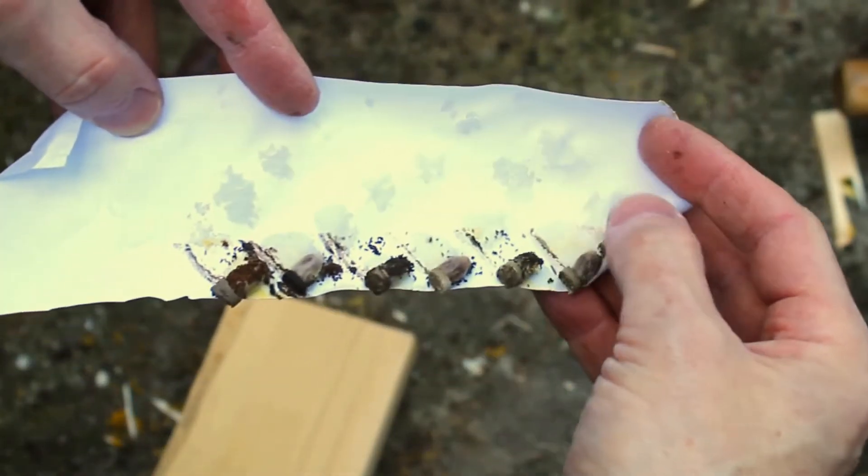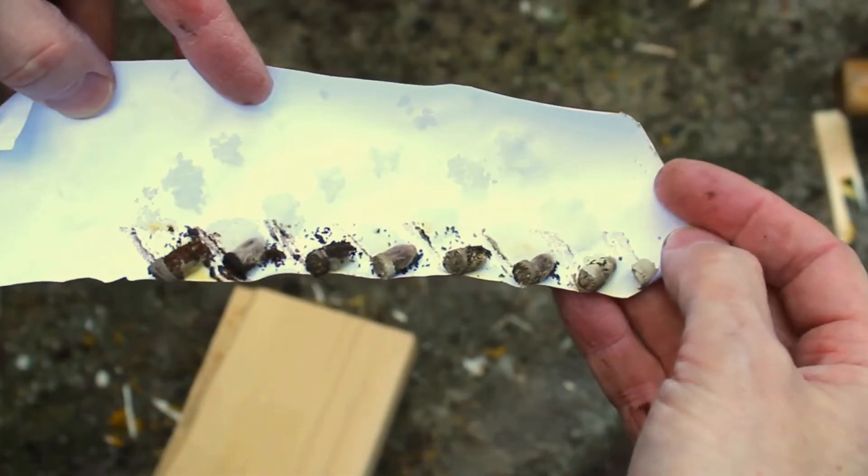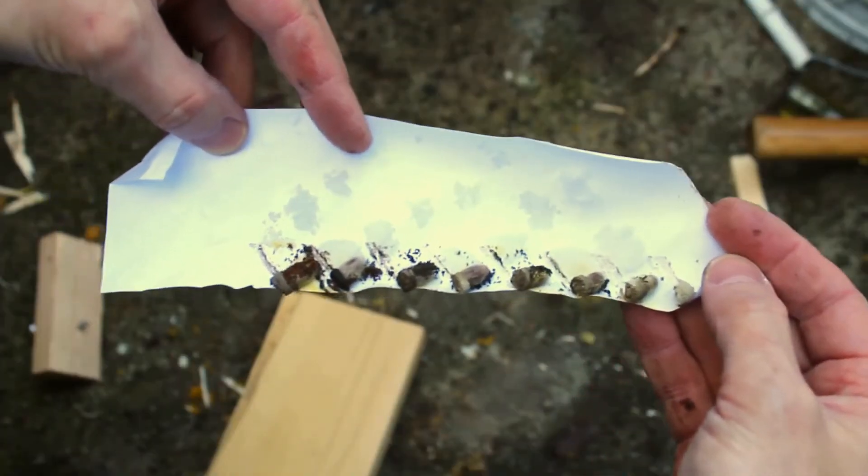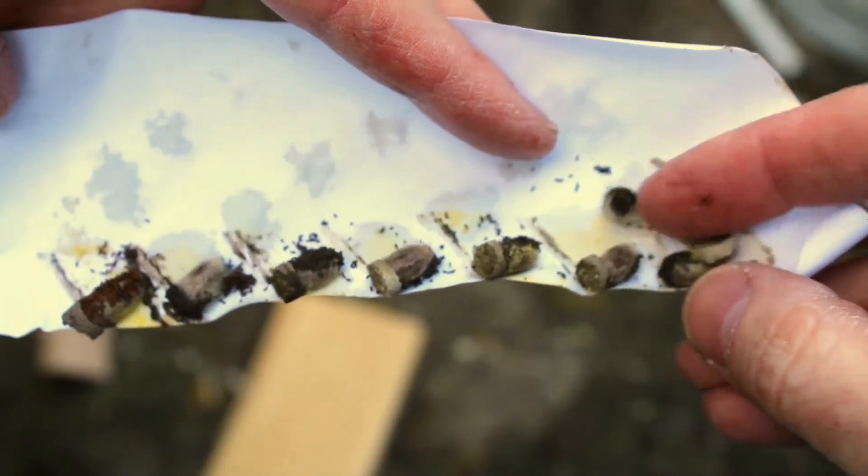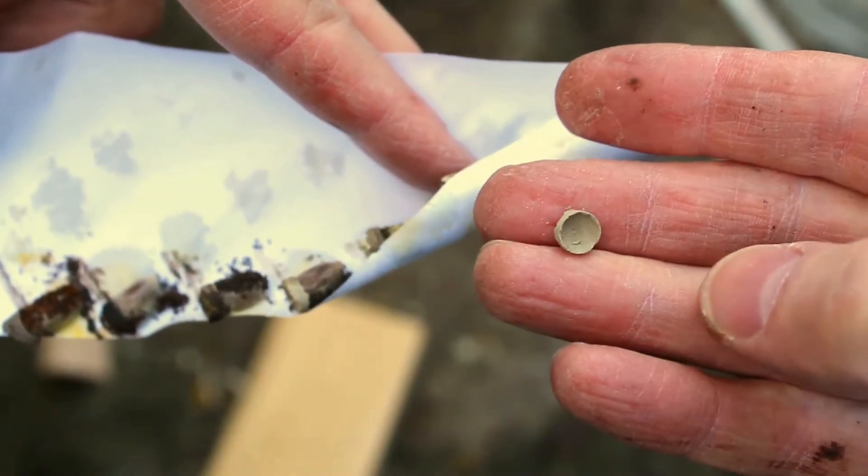Unrolling the paper tube reveals the cocoons inside. It is easy to see here how the nesting chambers are sealed with the little mud cylinder walls. This mud is where the bees get their name.